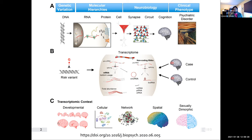You can try to study it across time — that would be like across developmental stages. Once you have some data, you can also look at it across different cell types in a given snapshot of time. You can try to build networks with the genes, look at where genes are being active across spatial regions of the brain, or look at differences across sex.